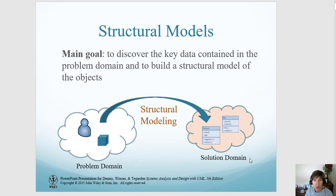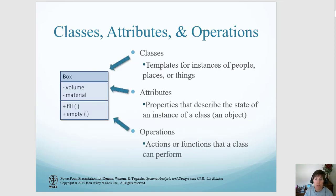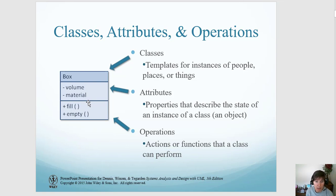And we start that with an analysis class diagram. We're going to identify what classes in the system we're going to need for the solution. Classes use a diagram that has three sections: a class name, attributes — those properties that contain the information that class is going to hold — and operations, which represent the functionality of the class, the things the class can do.